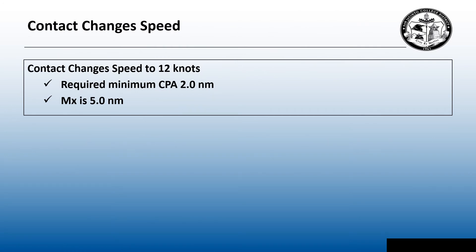The contact calls me and tells me they're going to slow down. So the contact is going to slow to 12 knots. Our own ship's required CPA is still 2 nautical miles and the execution point or MX is still 5 nautical miles.